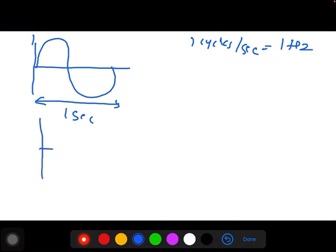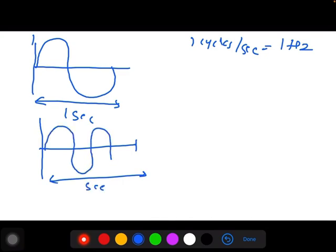Suppose in one second there are two cycles, one and two. What is the frequency here? It is two cycles per second.